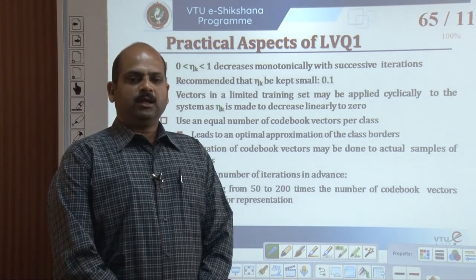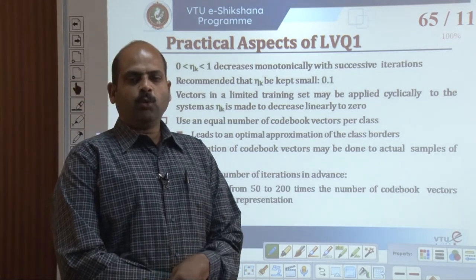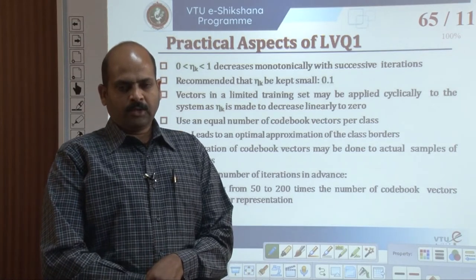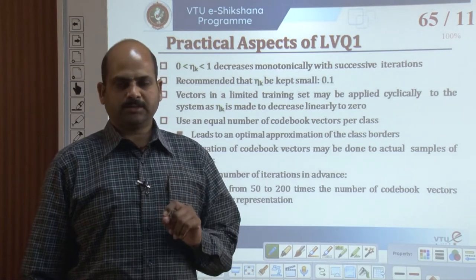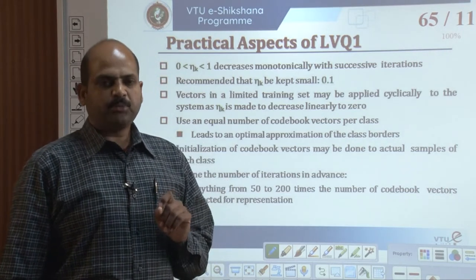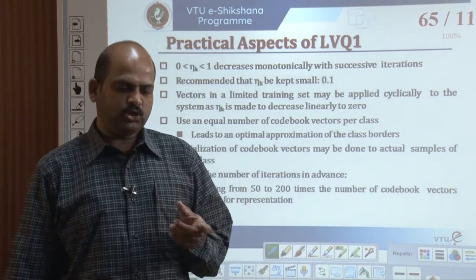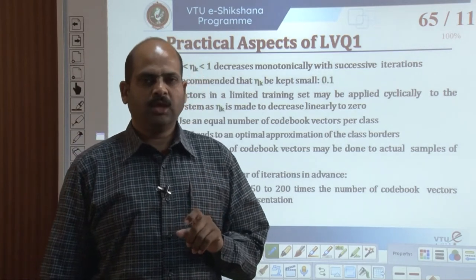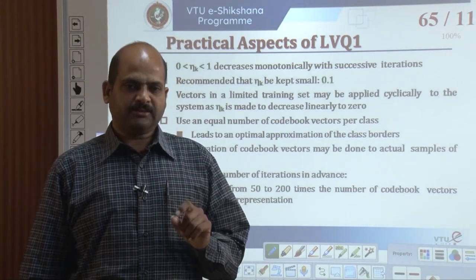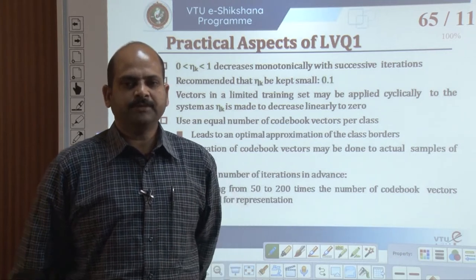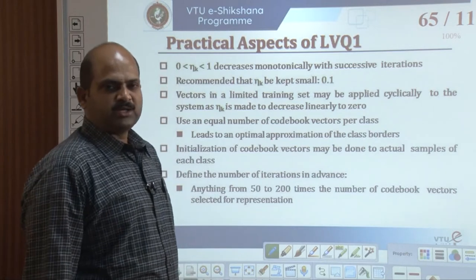Neural networks have a tendency to overlearn, so it is necessary to define the number of iterations in advance. The number of iterations may vary from 50 to 200. The number of codebook vectors to be selected for representation must also be chosen, though there is no substitute for experience in selecting suitable simulation parameters.